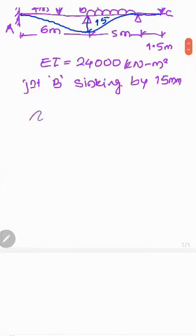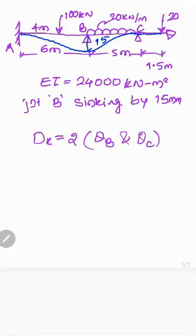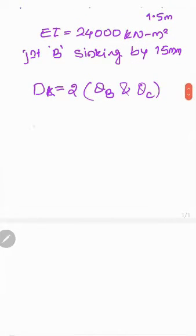The first step is to calculate the degree of kinematic indeterminacy (DK). The DK value is two. Joint A will have no deformation, but joint B will have a rotation and joint C will have a rotation. So we have two unknowns: theta B and theta C. Axial deformation is restricted since it is a rigid beam.